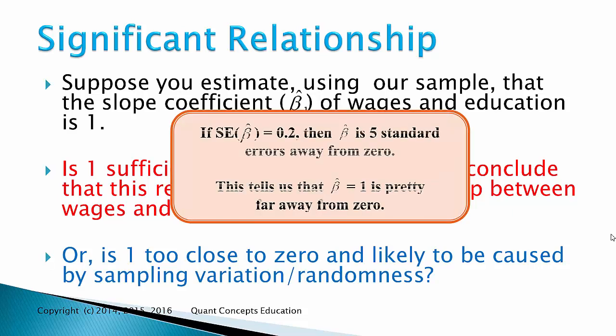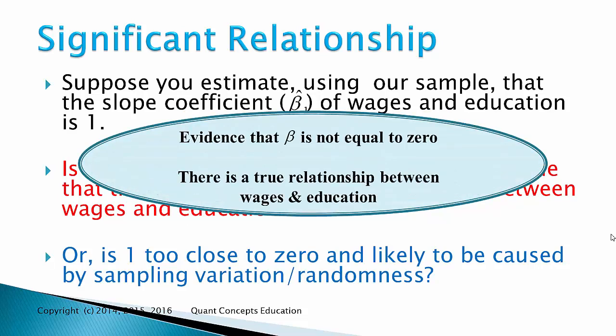Suppose the standard error is 0.2. In this case, an estimated beta of 1 is 5 standard errors away from 0, which means it's pretty far away from 0. This is evidence that the population beta is not equal to 0 and that there is a real relationship between wages and education.